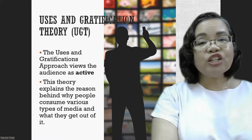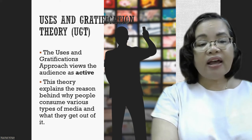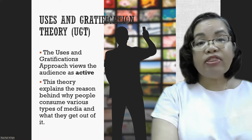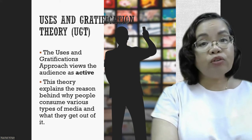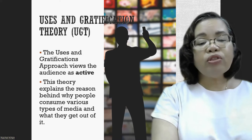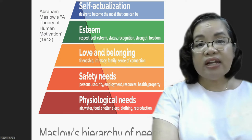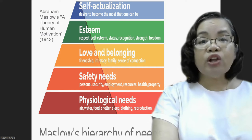The uses and gratification approach views the audience as active — that is, they actively seek out specific media and content to achieve certain results or gratifications that satisfy their personal needs. This theory explains the reason behind why people consume various types of media and what they get out of it. The theory explores how the audience will spend their time finding media that meet their needs, and suggests that we only use media that make us feel gratified.